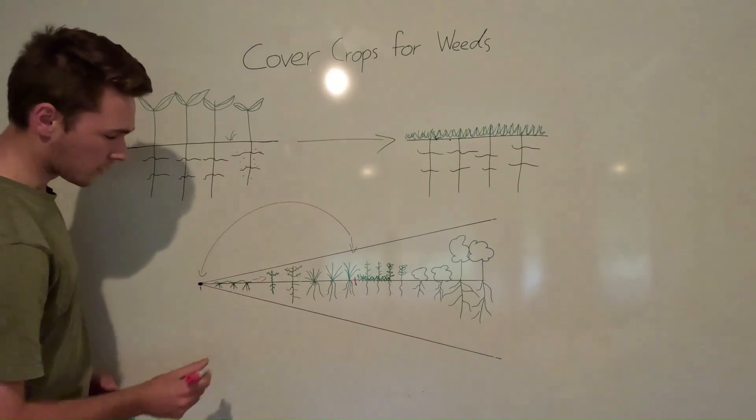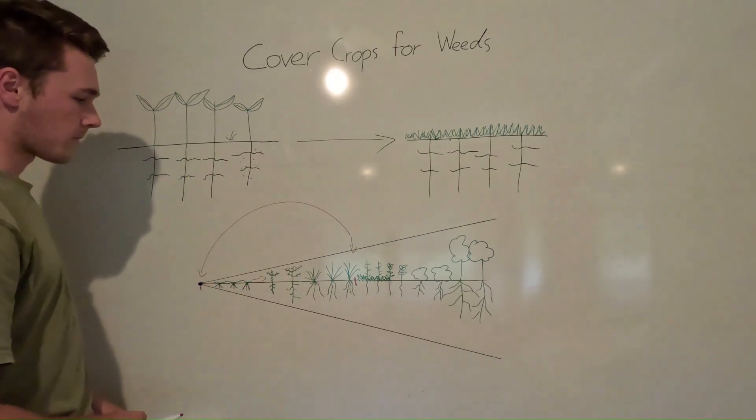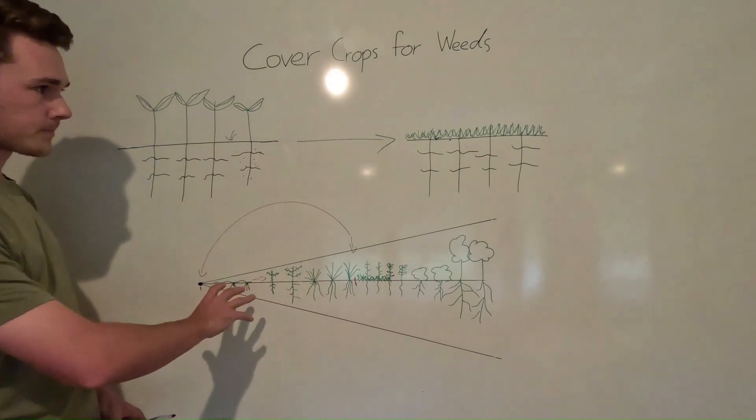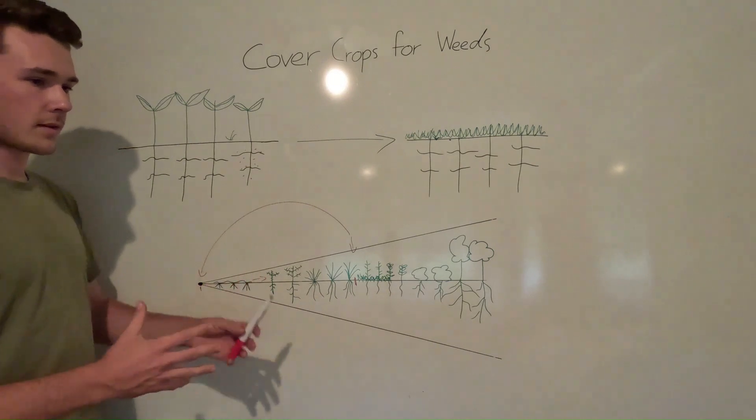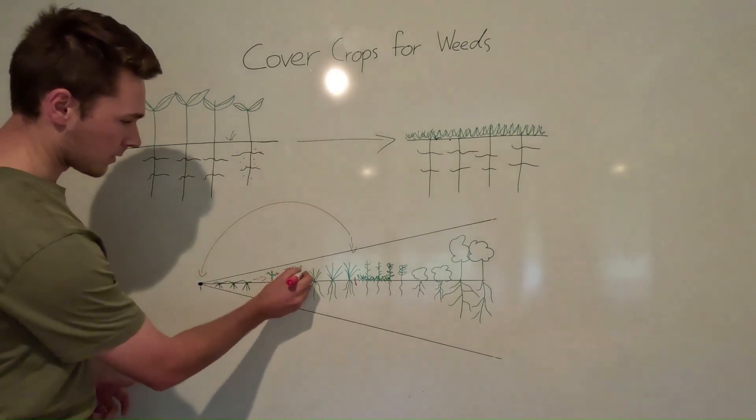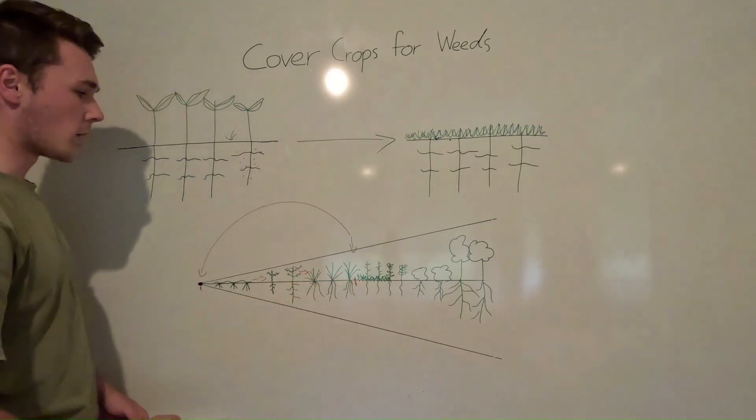And then from there, it'll move to like thistle plants, plants with tap roots or anything with a thistle that doesn't really want to be touched. And then that will go to other grasses and then what we probably want.